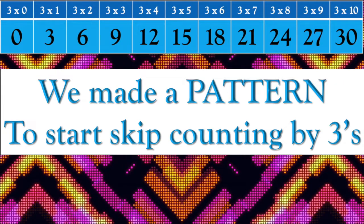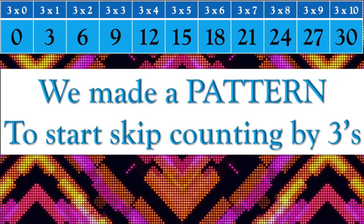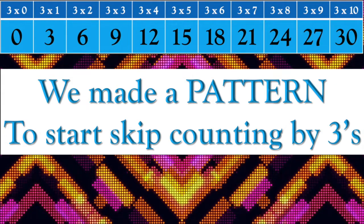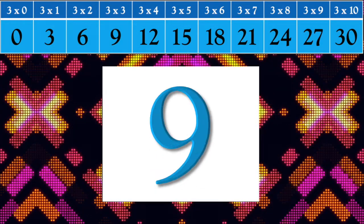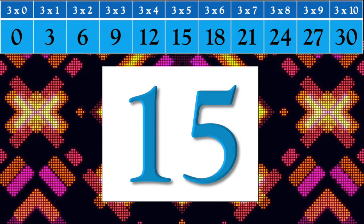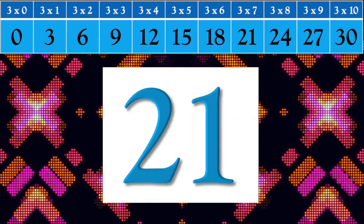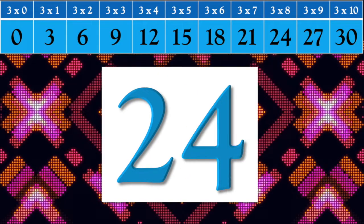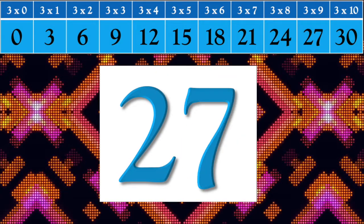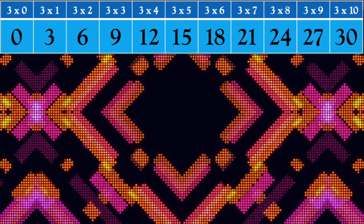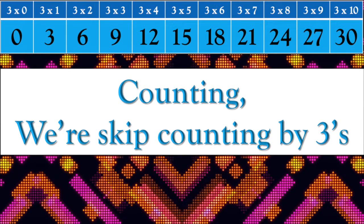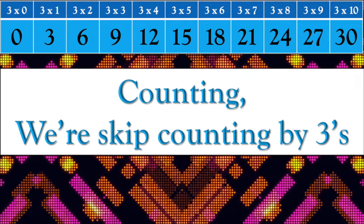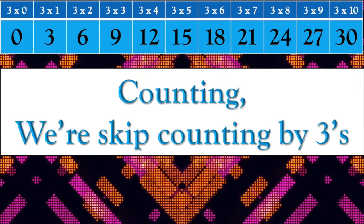We made a pattern to start skip counting by threes: 3, 6, 9, 12, 15, 18, 21, 24, 27, 30. Counting, we're skip counting by threes.